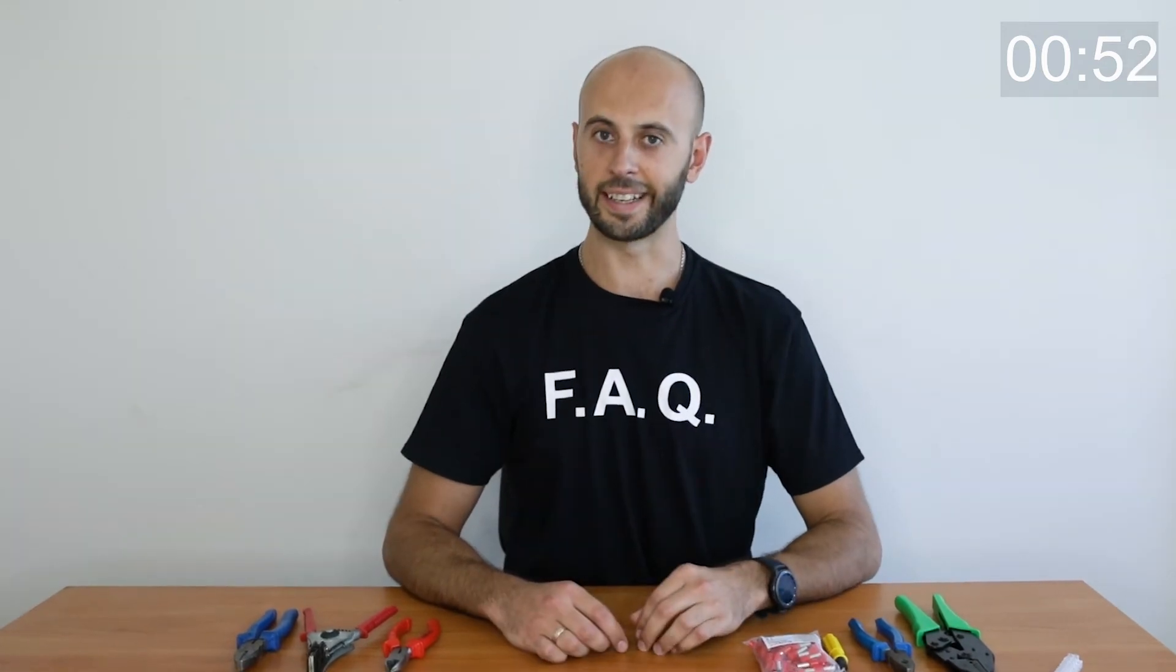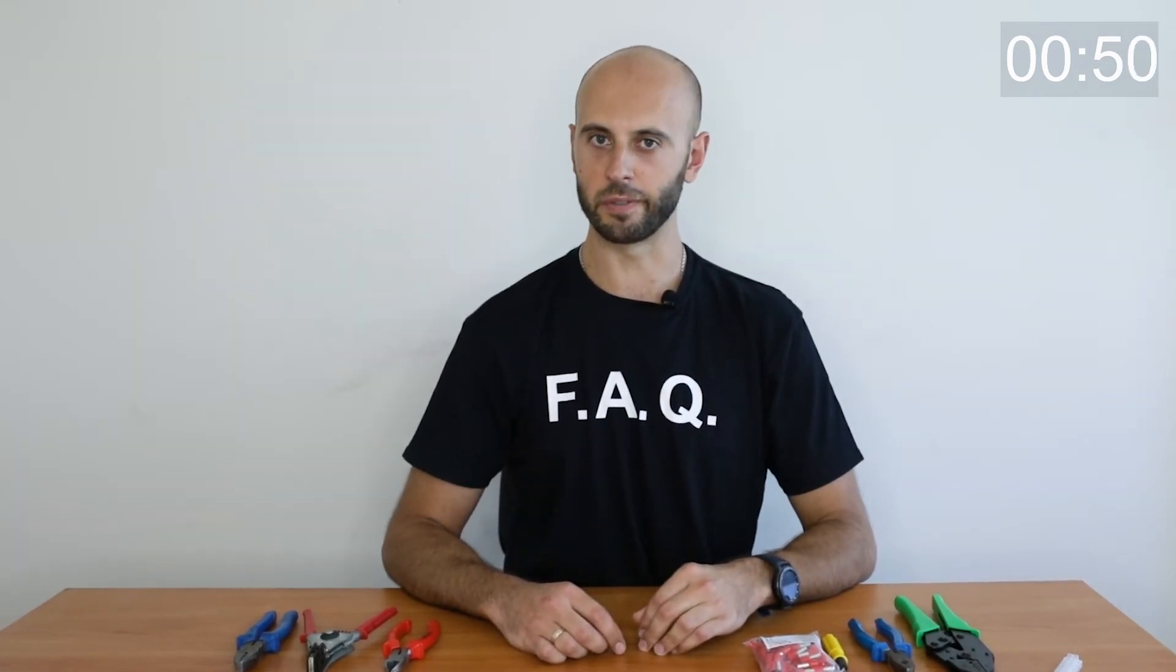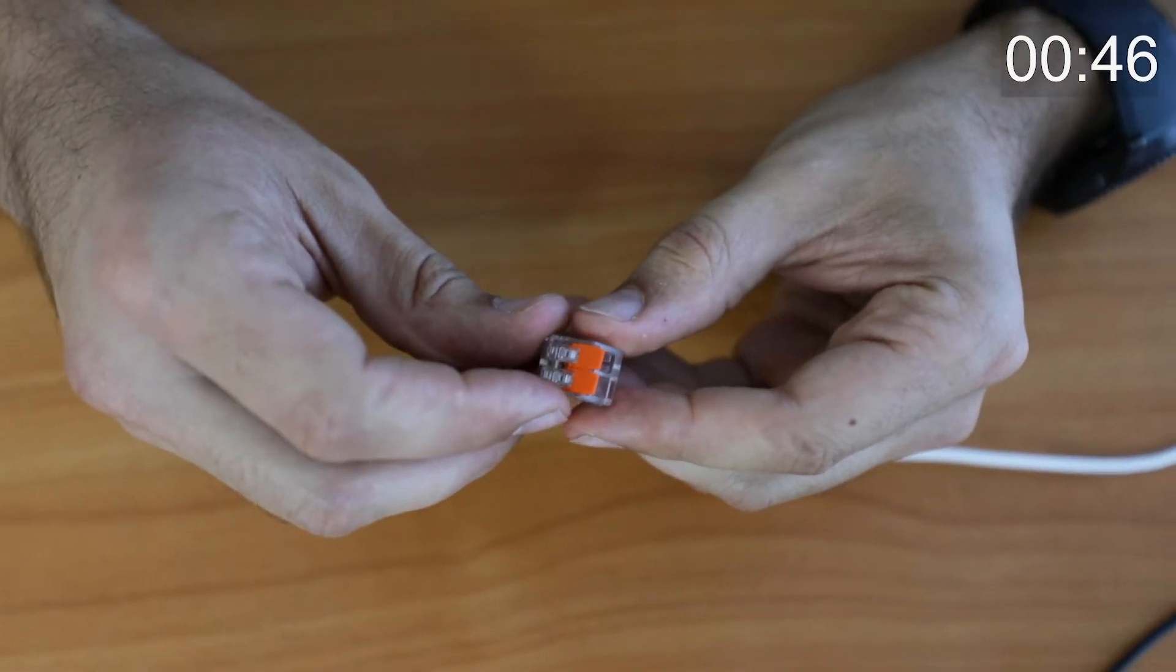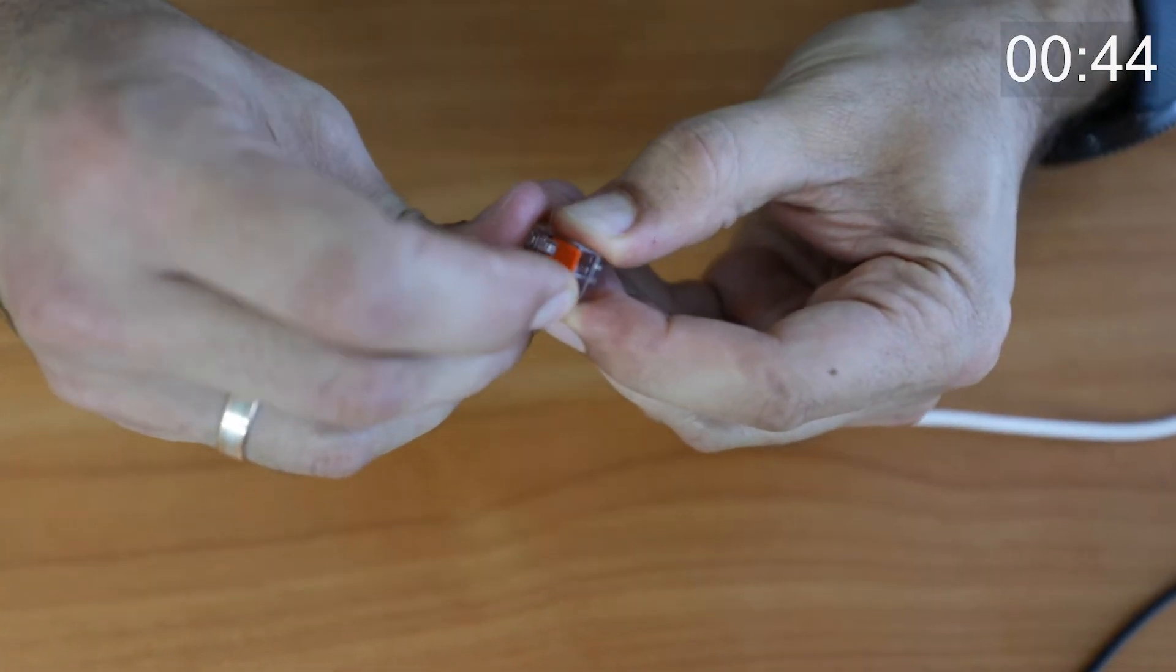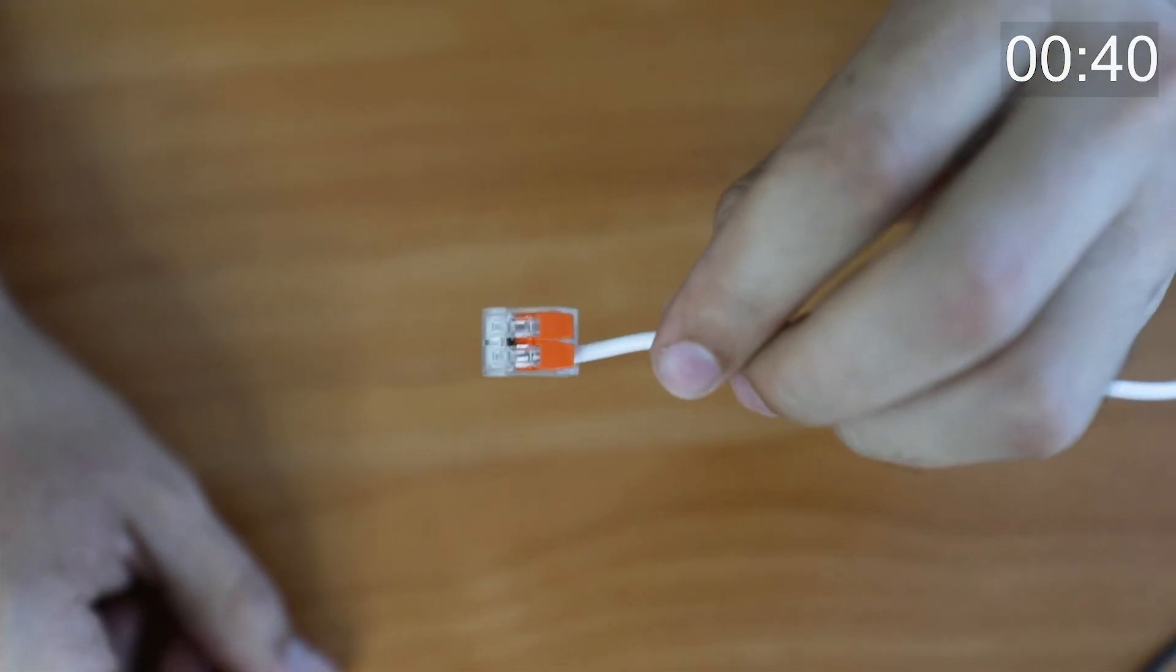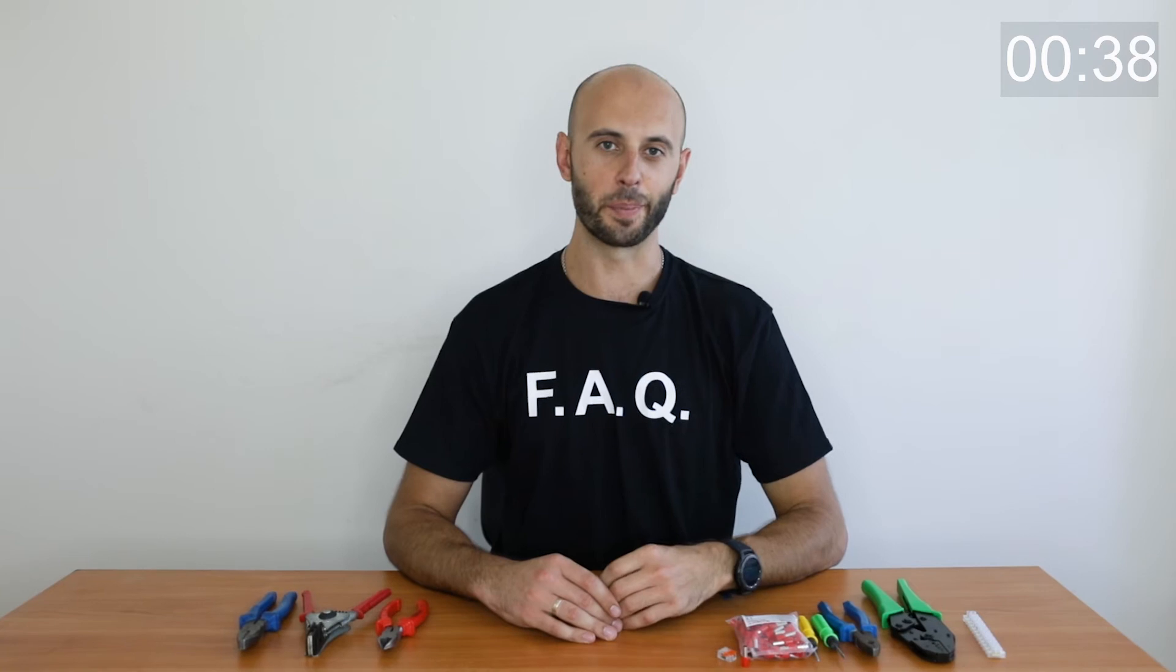To connect copper and aluminum, as for the same type wires, WAGA clamps are commonly used. It's simple: select the cross section and necessary number of wires, strip them, open the lever, insert all the way, and just close it.